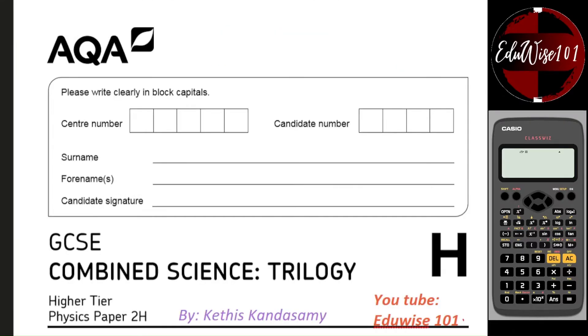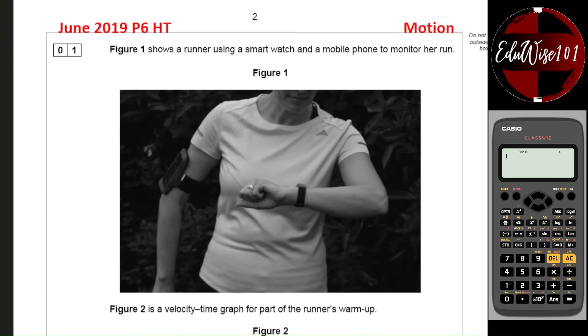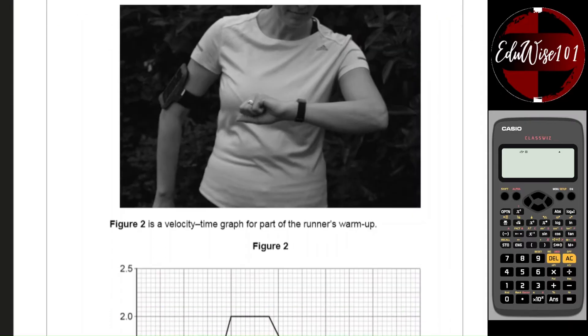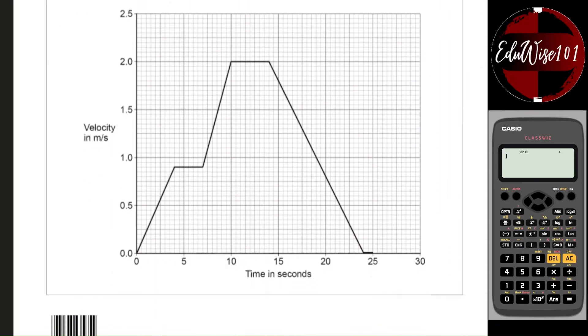So let's have a look at question number one. Question number one is on the topic of motion. Figure one shows a runner using a smartwatch and a mobile phone to monitor her run. Figure two is a velocity-time graph for part of the runner's warm-up, showing time in seconds on the x-axis and velocity on the y-axis. Now when you look at this graph you should be able to interpret what's actually happening in terms of the shape.